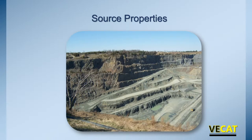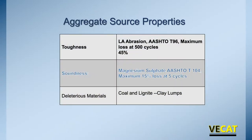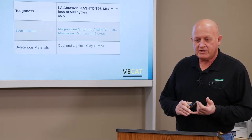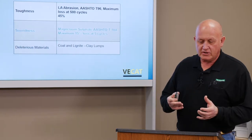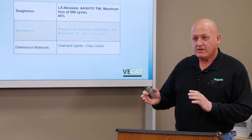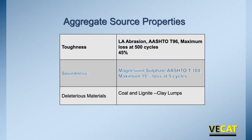Source properties are predominantly what Mother Nature has blessed us with — properties inherent to the materials themselves. When we talk about toughness, we're talking about the Los Angeles abrasion test, AASHTO T96. We see a maximum loss at 500 cycles, or 45 percent maximum. It's a graded sample with four different gradings and a certain number of ball bearing spheres. During the test, there are 500 revolutions of a drum, and the difference between initial and final sample mass tells you the percent loss, giving us an idea of degradation potential during construction.